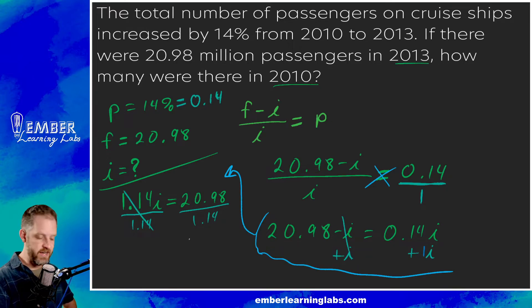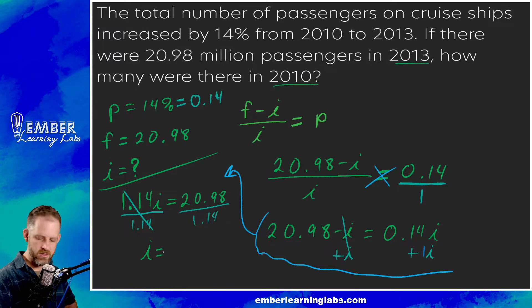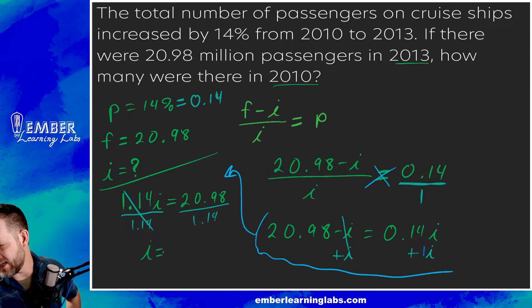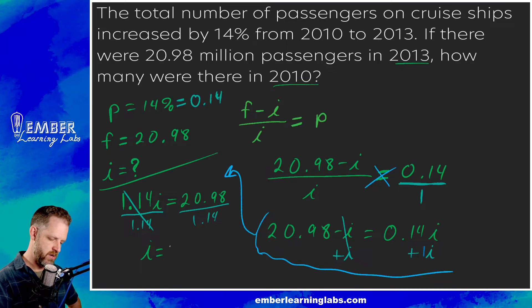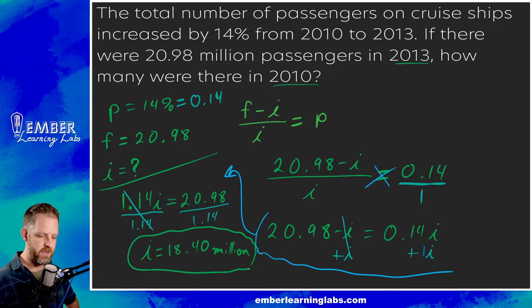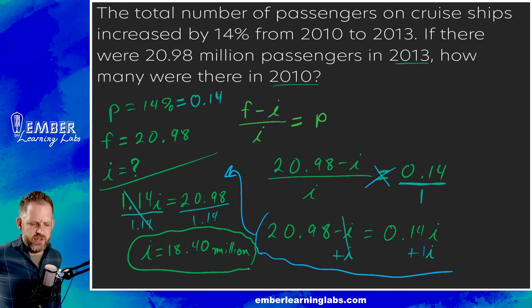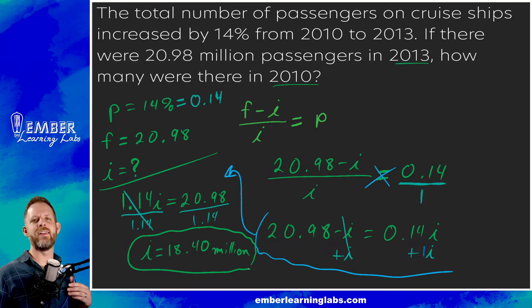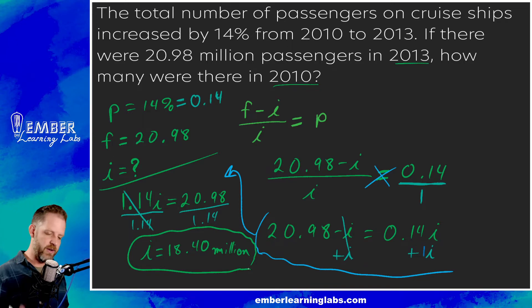So I, the initial amount — the number of passengers in 2010 — is 18.40 million. We keep the same number of significant figures, and in word problems we always carry the units along. That's that one — let me know in the comments or in class if anything was unclear. Let's do another example.